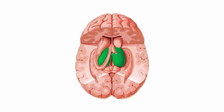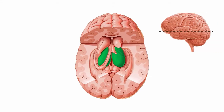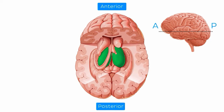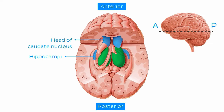First of all, let's figure out exactly what we're looking at. In this image, we see the cerebral hemispheres from a posterior superior view. We've resected the cerebral cortex down to the level of the temporal horn of the lateral ventricles where the hippocampi lie, and forward as far as the head of the caudate nucleus. In the centre, you can see the thalamus highlighted in green, remembering that we're looking at it from a posterior perspective.